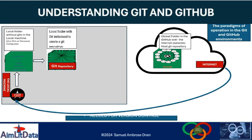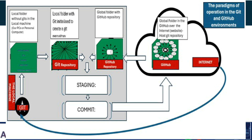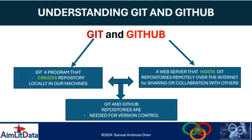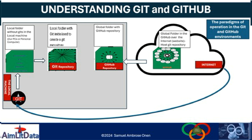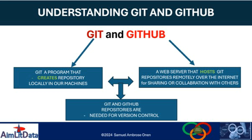Remember, a Git repository is created locally on your machine, while a GitHub repository is created from the GitHub website. GitHub is a storage for hosting Git repositories. To create a GitHub repository, you have to create it from the GitHub website and then start using it. A Git repository is created locally on our machine; they are all needed for version control.